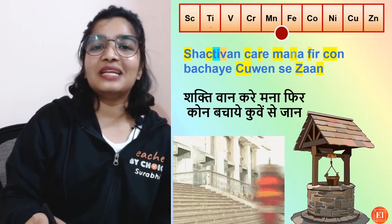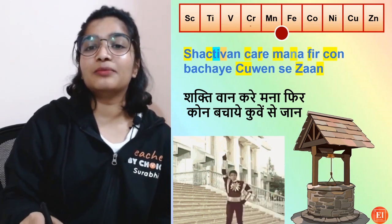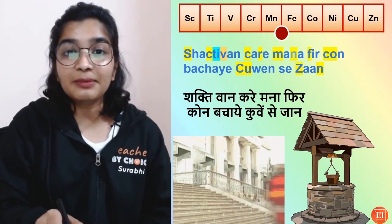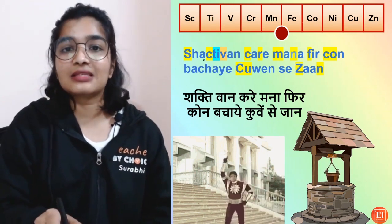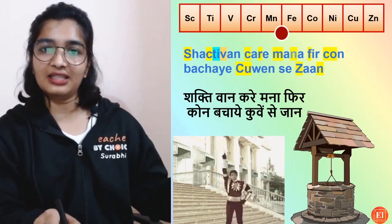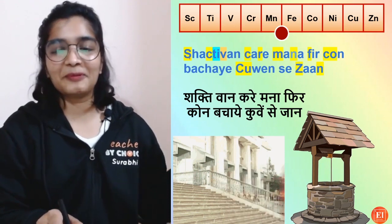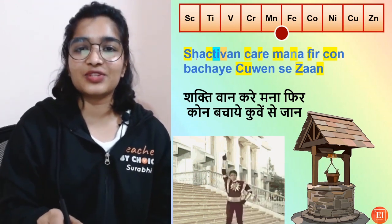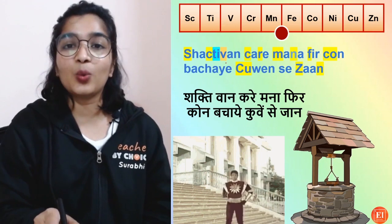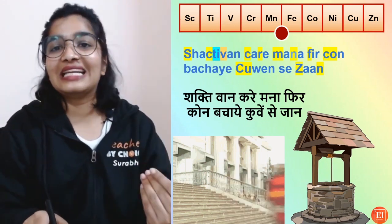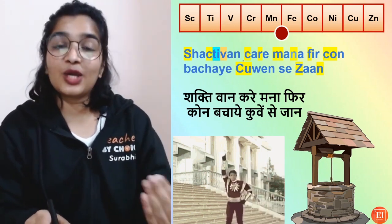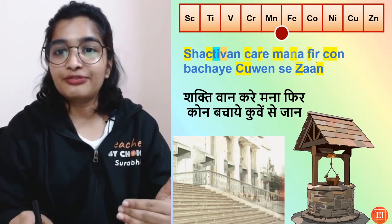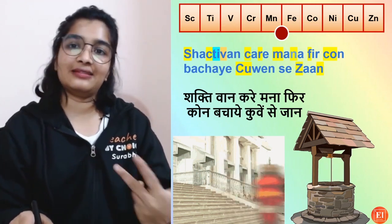So here we have: Scandium, Titanium, Vanadium, Chromium, Manganese, Iron, Cobalt, Nickel, Copper, Zinc. So 'Shakti maan' — S, C is for Scandium. T, I is Titanium. V is for Vanadium. And 'kare' — Chromium. 'Mana' — Manganese, M, N. 'Fir' — so F is for Iron (Fe).